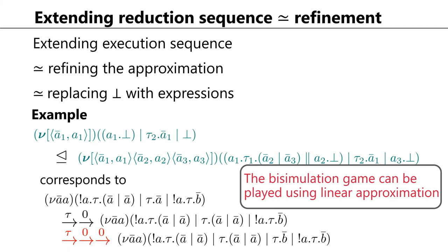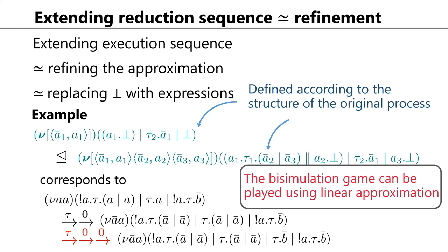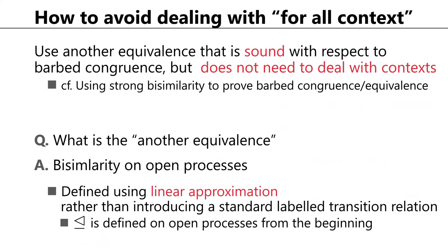This means that we can play the bisimulation game using linear approximations. Since the approximations are defined according to the structure of the original process, the refinement relation is also inductively defined, allowing us to do inductive reasoning to prove bisimulation. To avoid dealing with 'for all contexts,' we follow the common approach of using another equivalence — bisimilarity on open processes — that is sound with respect to barbed congruence but does not require reasoning about context.